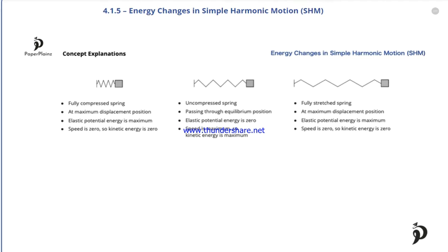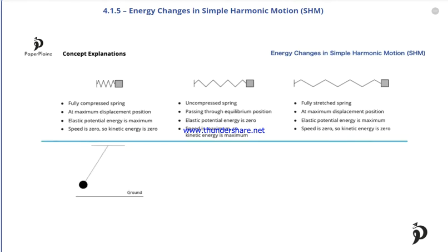Let's look at energy changes for a simple pendulum. Let's displace our pendulum all the way to the left, release it and let it pass through the equilibrium position, and then allow it to swing all the way to the right. When the pendulum is all the way to the left, at its maximum displacement position, it is at the highest possible point above the ground during its motion.